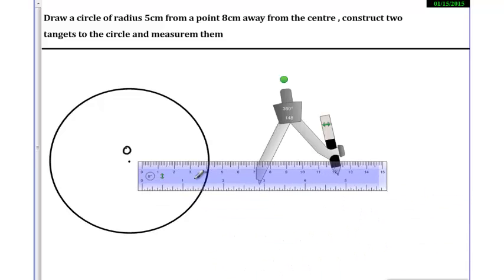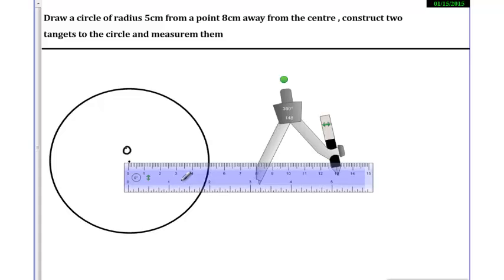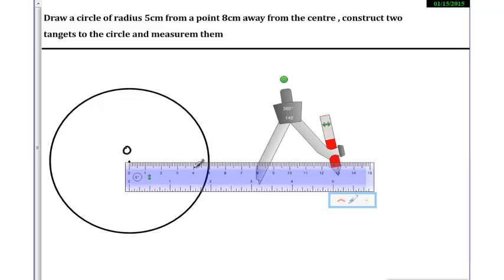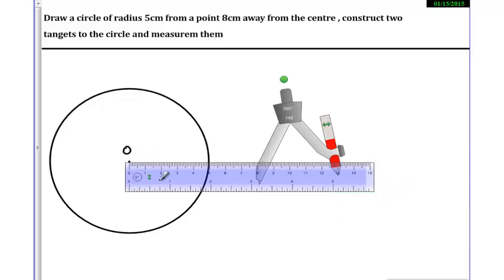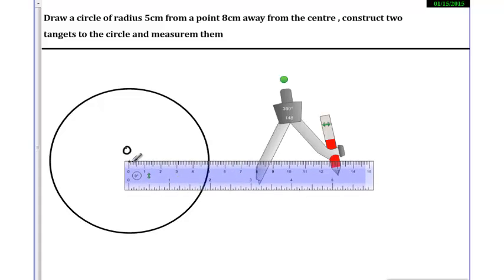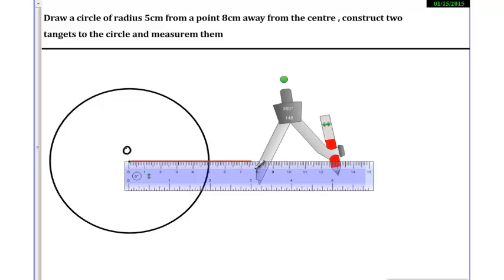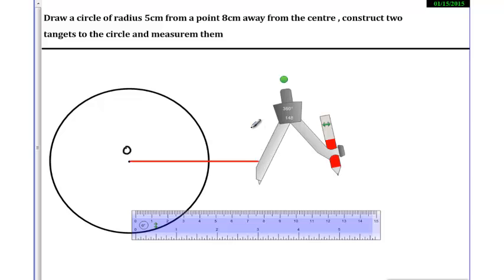Let me take a point which is 8cm away from this center. So from the center 8cm away, I'm taking a point. Let me take another measurement, 8cm, so I am taking an 8cm point. This is 8cm away and let me name this point as A.